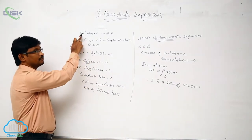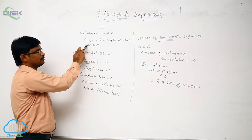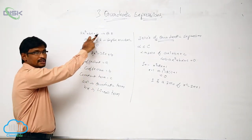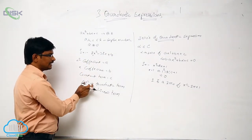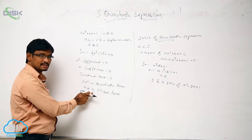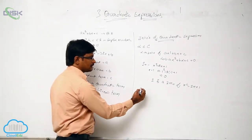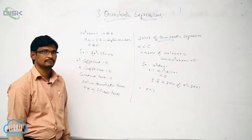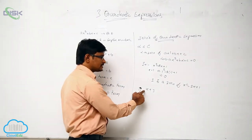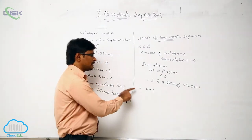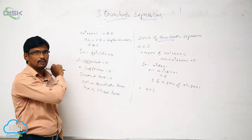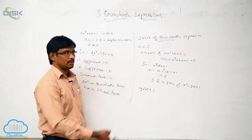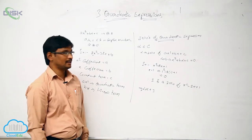A quadratic expression is in the form Ax squared plus Bx plus C, where the x squared coefficient A should not be equal to 0. The Ax squared term is called the quadratic term, and the Bx term is called the linear term. For example, x plus 3 is not a quadratic expression because the x squared term is not there — its x squared coefficient is 0, which violates the definition.